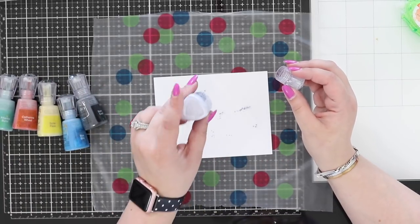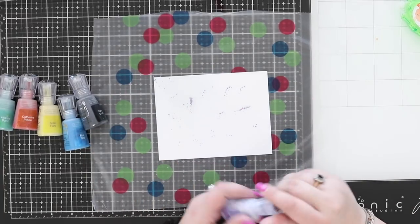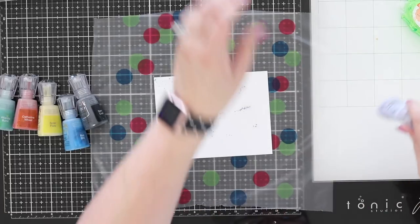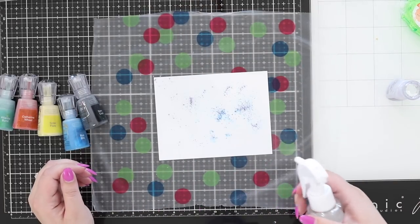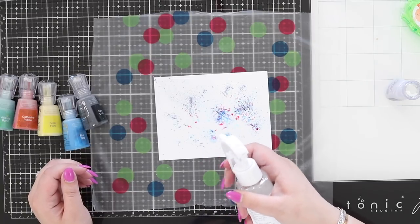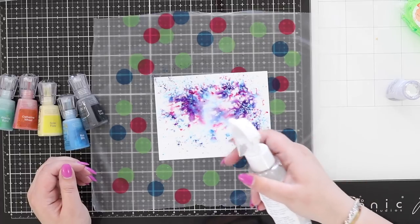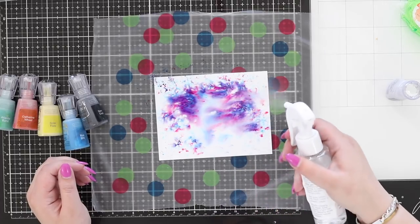They are a pigmented water-activated powder, so think something like your Brushos, but they have a mica powder included which means you're going to get instant shimmer. So when I start spritzing here, you can see I haven't just got blue—I have blue and pink and purple. Think of the beautiful galaxy backgrounds you could create with this.